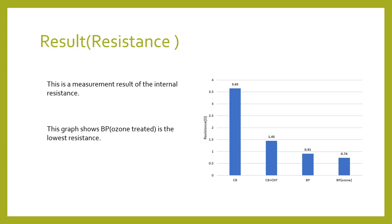The internal resistance was lowest for ozone-treated buckypaper, followed by untreated buckypaper. This result shows that CNT is highly conductive and ozone treatment lowers internal resistance.